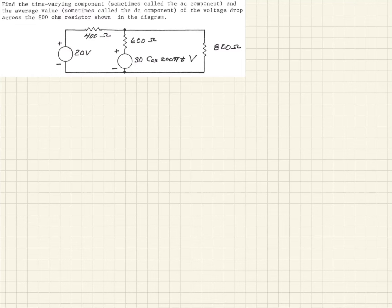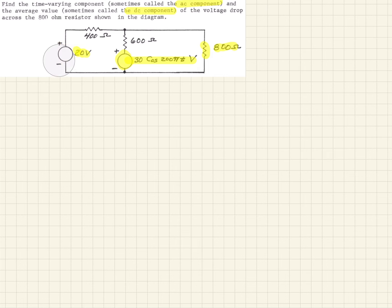Here we have a simple circuit with two voltage sources: a 20 volt DC source and a 30 volt cosine AC source, which is time varying. We're considering the 800 ohm resistor and want to find both the AC component — the voltage drop from the time varying source — and the DC component from the 20 volt source. To do this, we're going to use superposition.